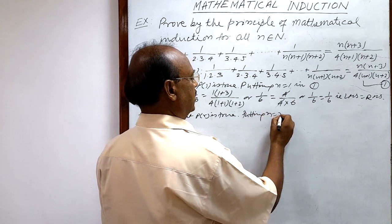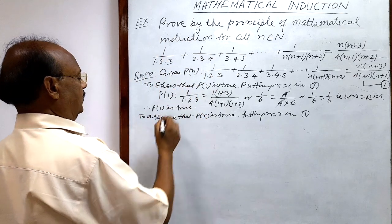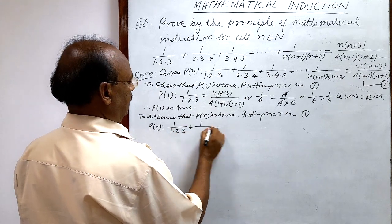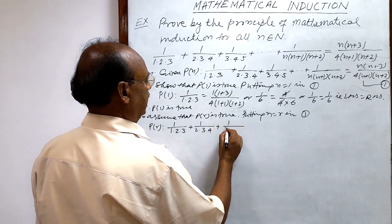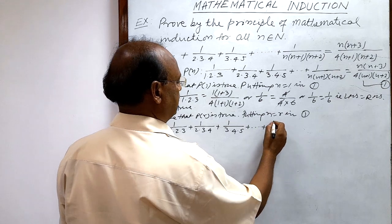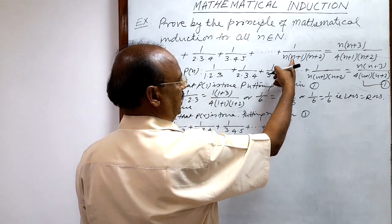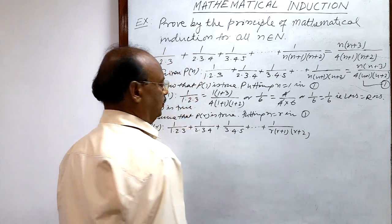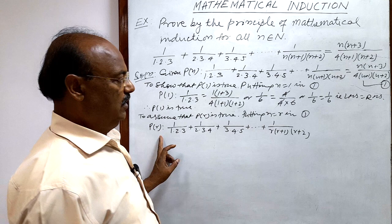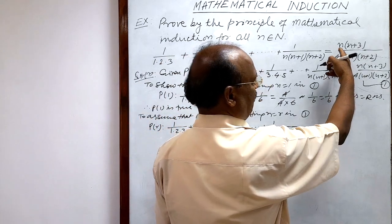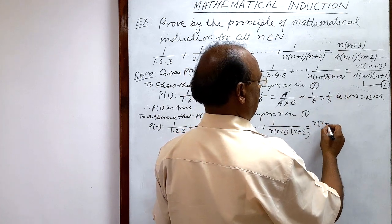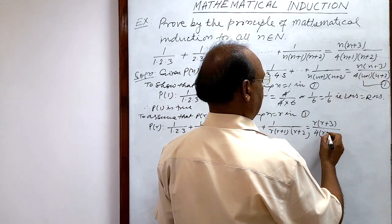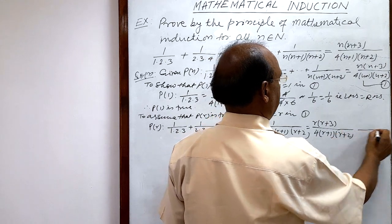Putting n = r in relation number 1, P(r) is: 1/(1·2·3) + 1/(2·3·4) + 1/(3·4·5) + ... + 1/(r·(r+1)·(r+2)) = r(r+3) / [4·(r+1)·(r+2)]. Let us call this relation number 2. We are assuming this is true.